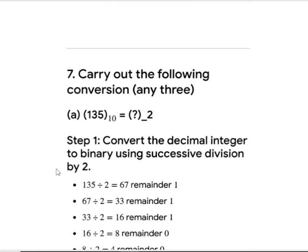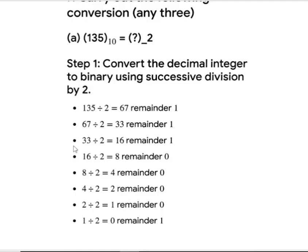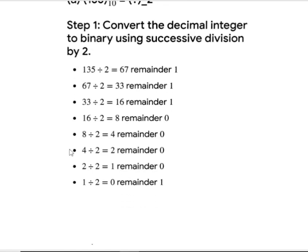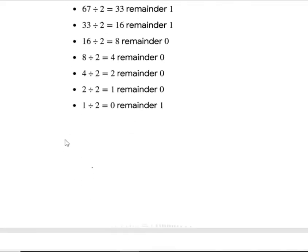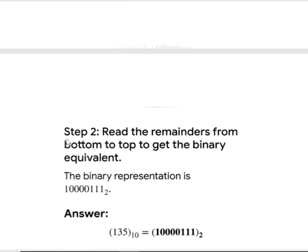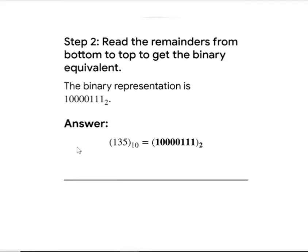Binary conversion example: convert 135 to binary. Divide 135 by 2 — quotient 67, remainder 1. Divide 67 by 2 — quotient 33, remainder 1. Divide 33 by 2 — quotient 16, remainder 1. Divide 16 by 2 — quotient 8, remainder 0. Read remainders from bottom to top to get the binary result.